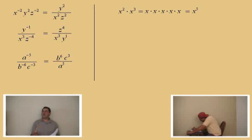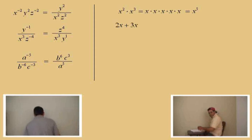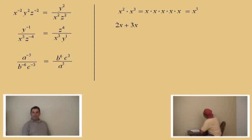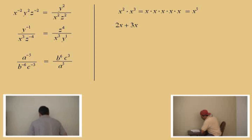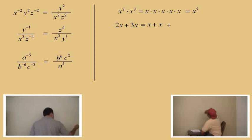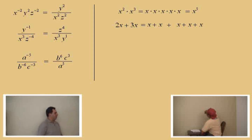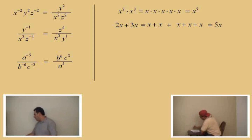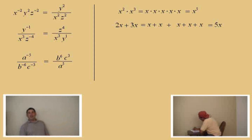So we're going over problems where students tend to make mistakes. Let's look at 2x plus 3x. This is like saying if you have two apples and somebody gives you three more apples, how many apples do you have? Five apples. It's the same problem. 2x means x plus x, and 3x means x plus x plus x. So x plus x plus x plus x plus x gives you 5x. So 2x's plus 3 more x's gives you 5x.